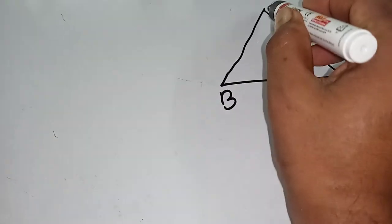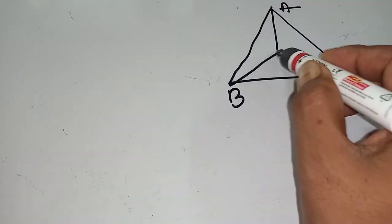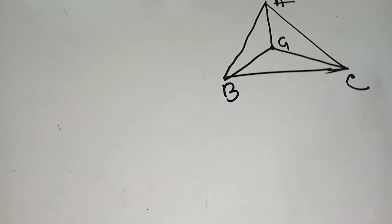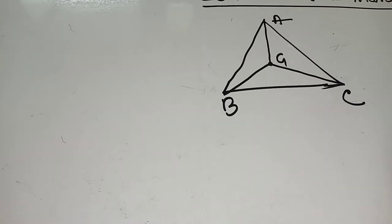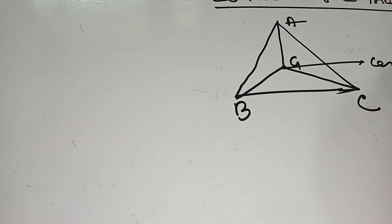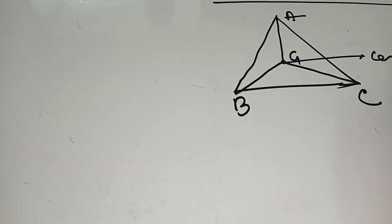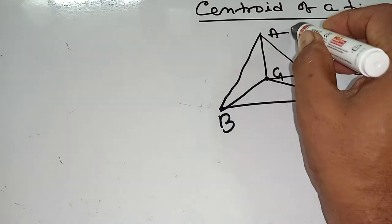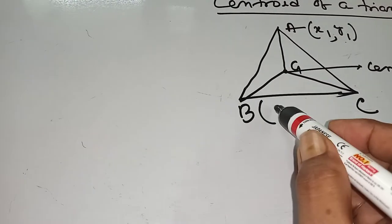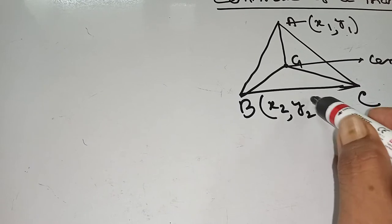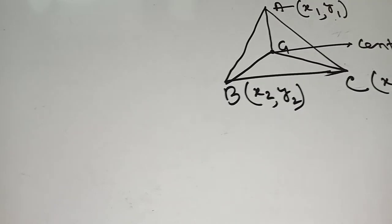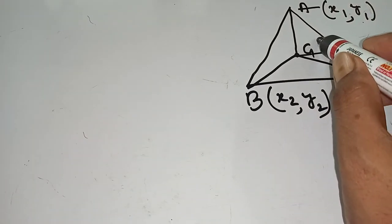If the centroid of triangle ABC is G, we need to find the coordinate of G. Let the coordinate of A be (x1, y1), coordinate of B be (x2, y2), and coordinate of C be (x3, y3). Then find the coordinate of G.